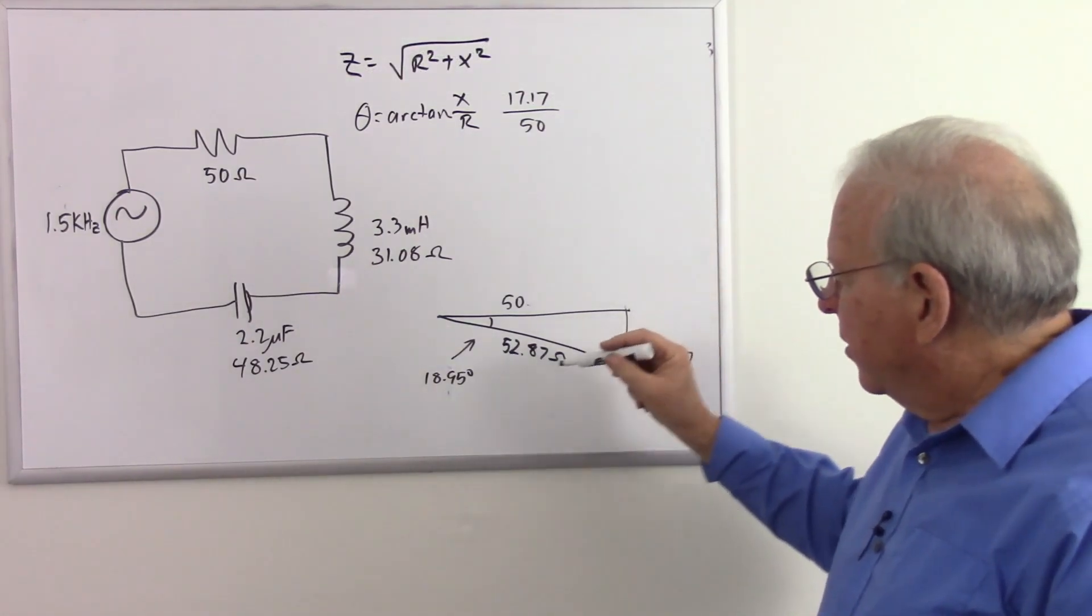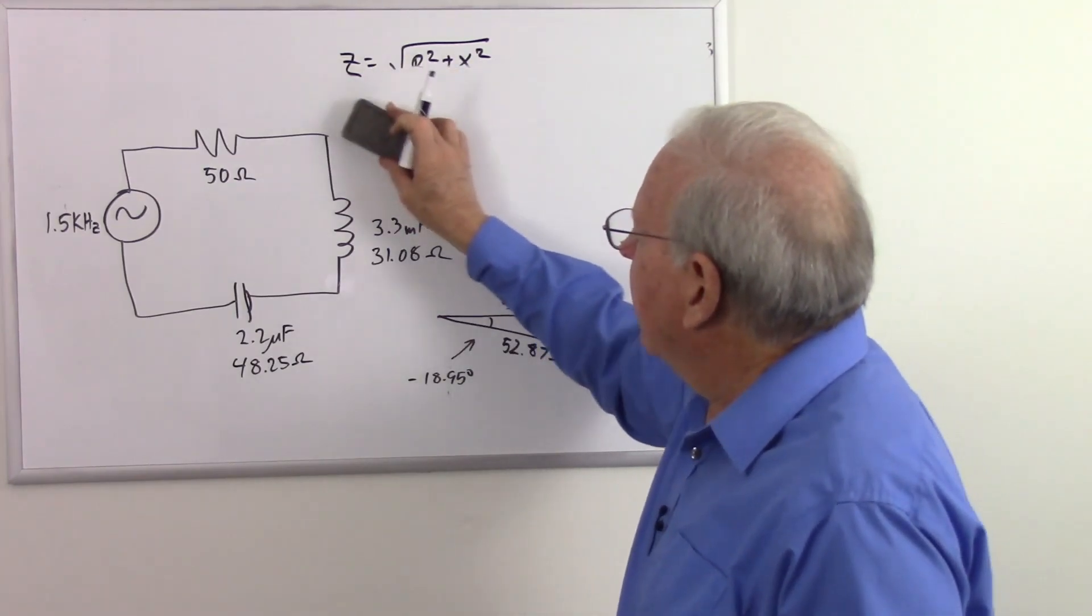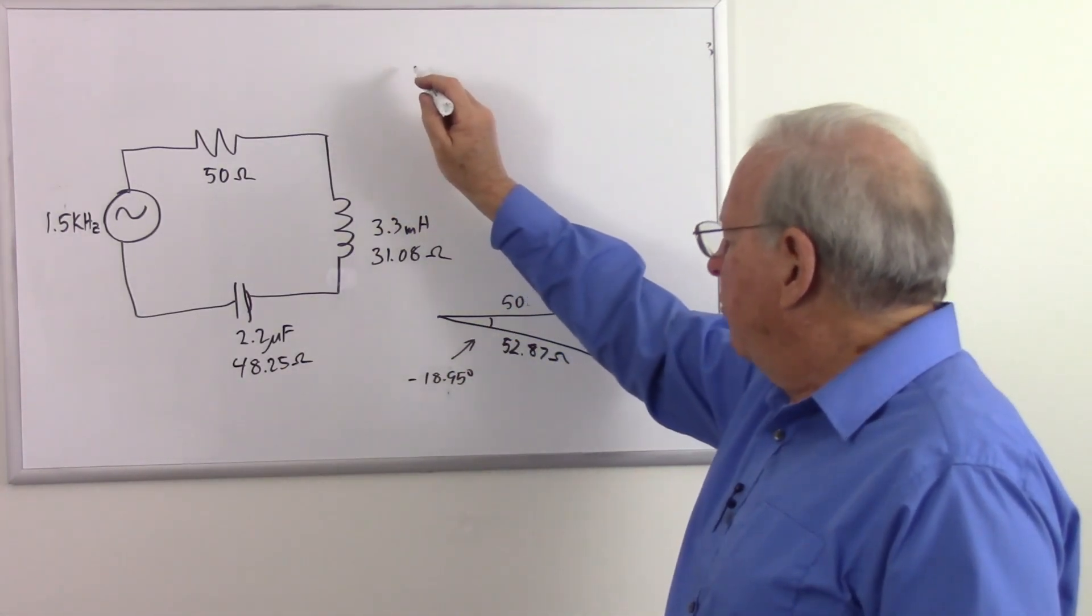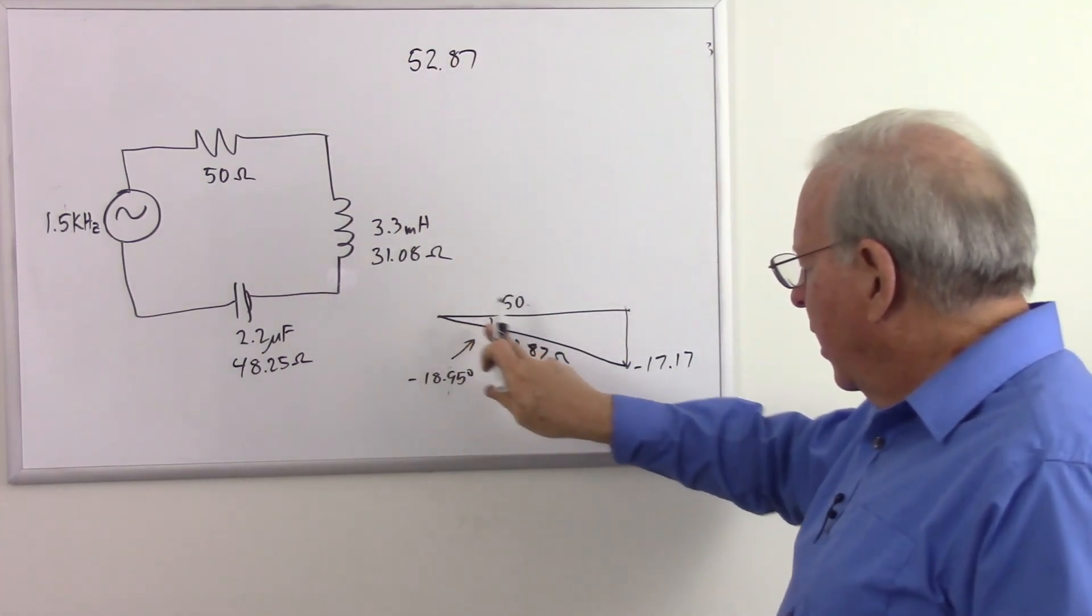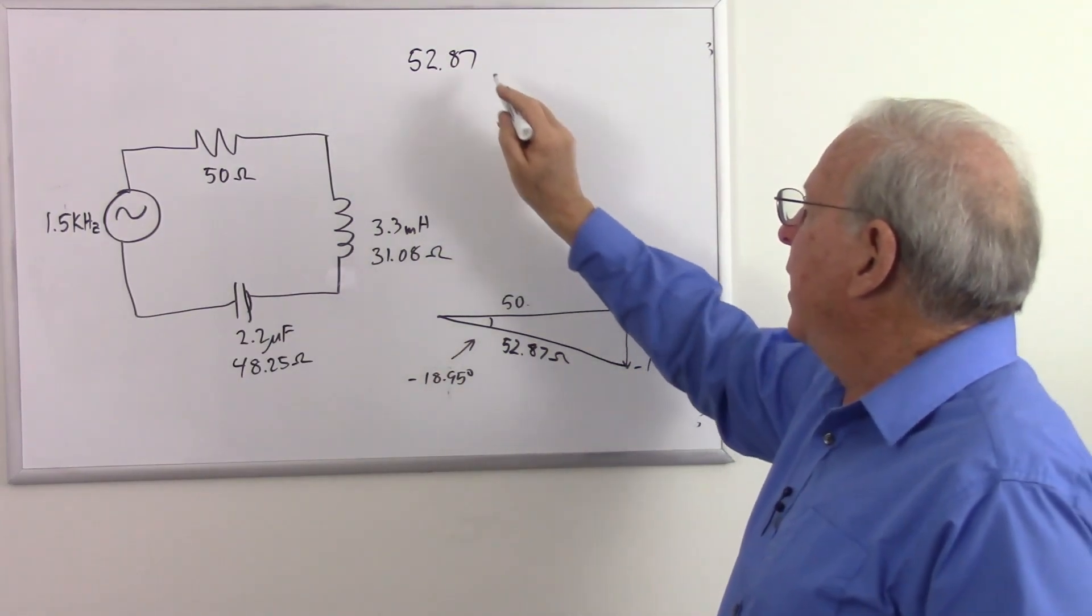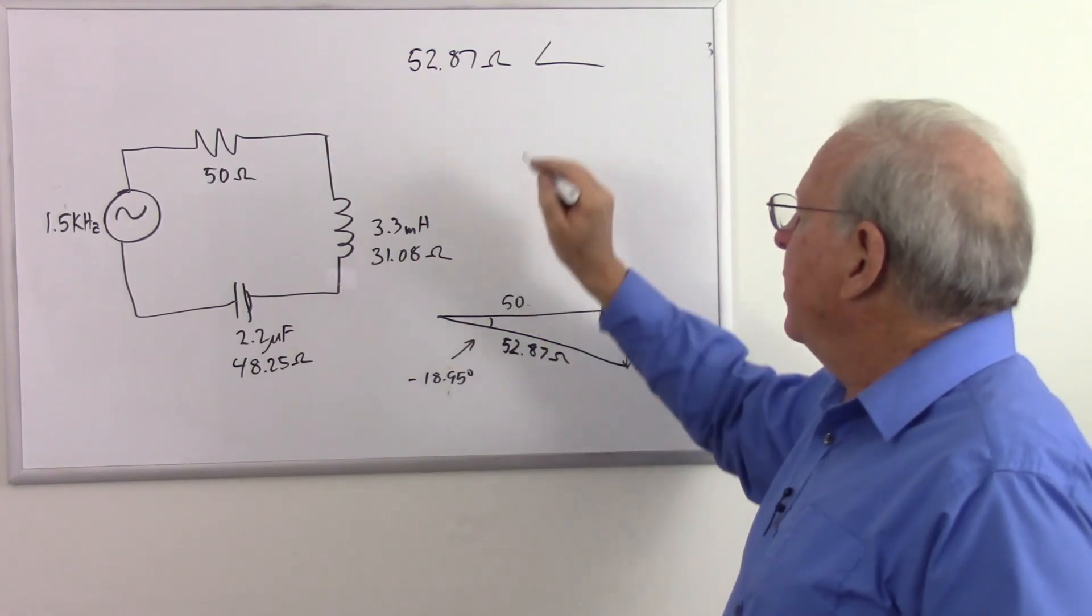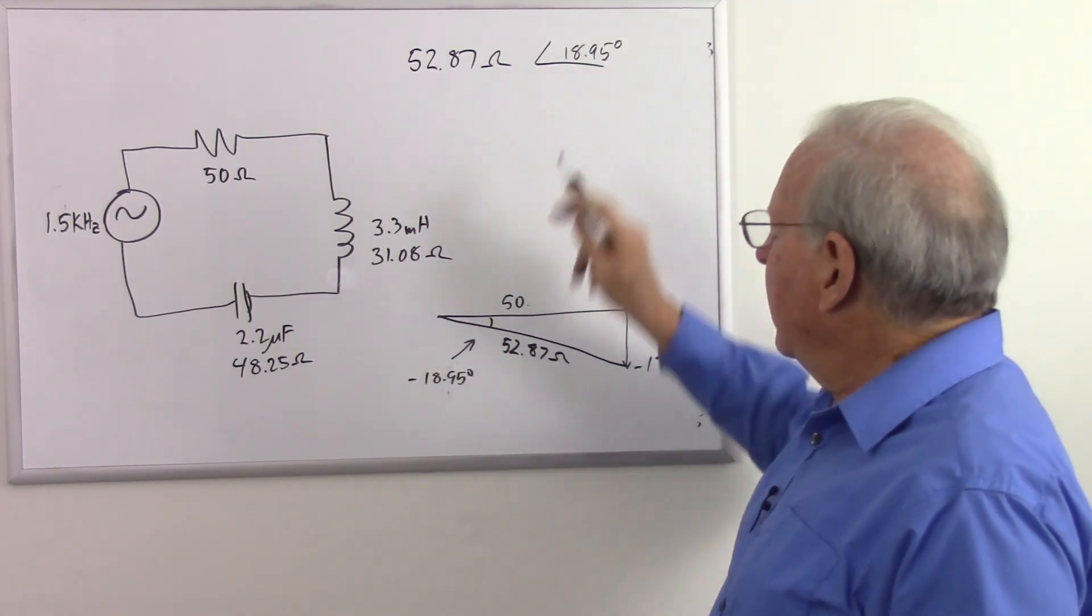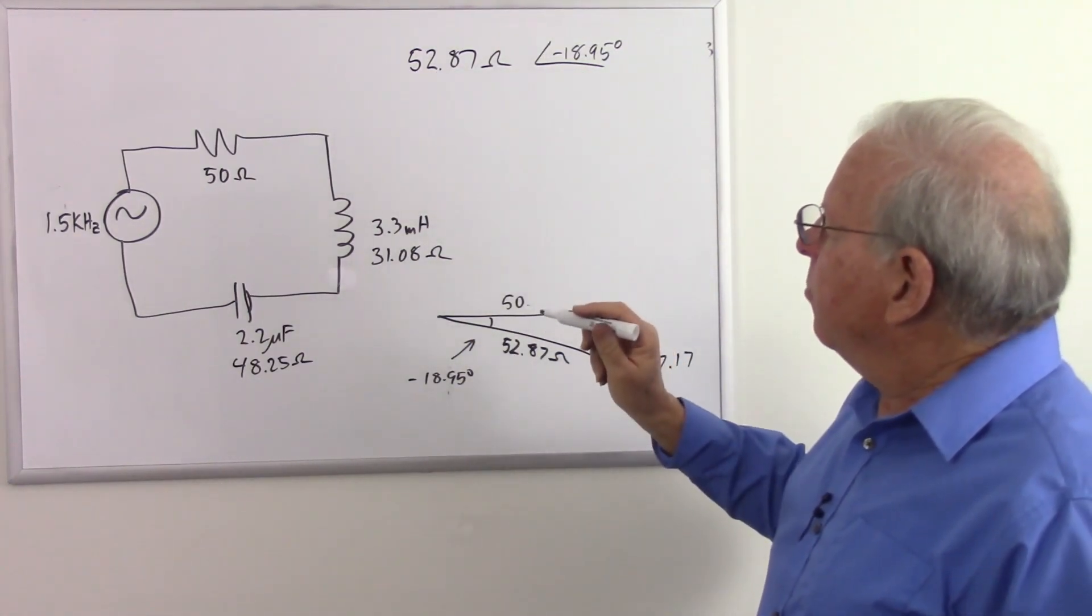So here we'll write that out as our proper impedance in polar notation. That will be 52.87, the hypotenuse of the triangle, 52.87 ohms, with a phase angle of 18.95 degrees. Capacitive, so it's negative. There's the impedance in polar notation.